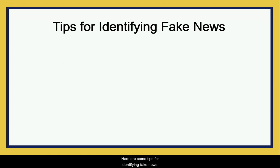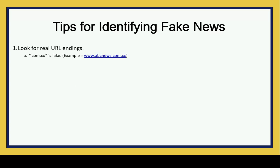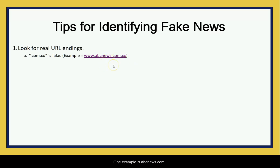Here are some tips for identifying fake news. Look for real URL endings. If you see '.com.co,' just know that that is fake. One example is abcnews.com.co.